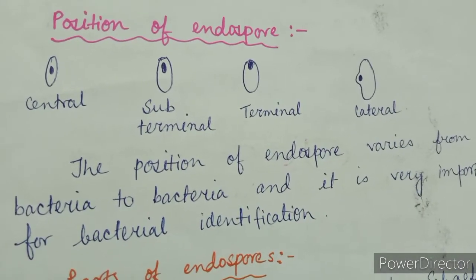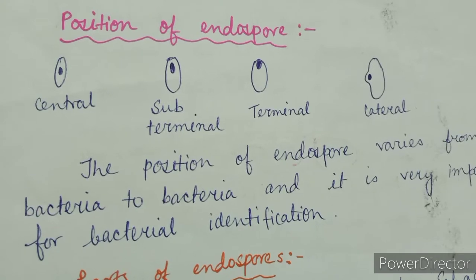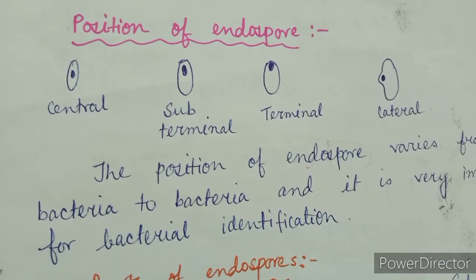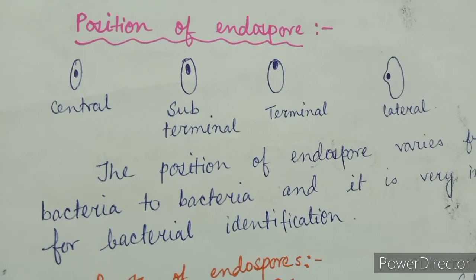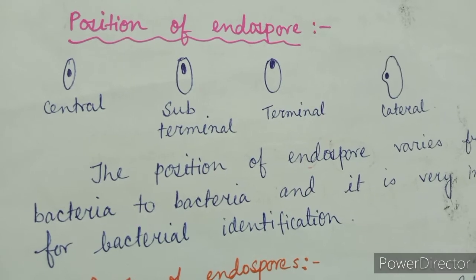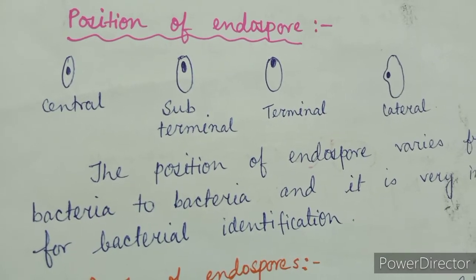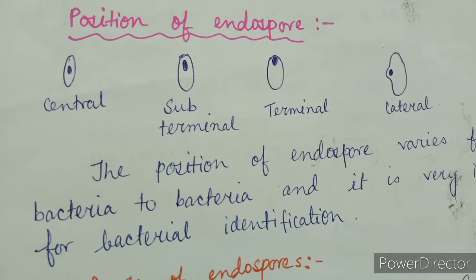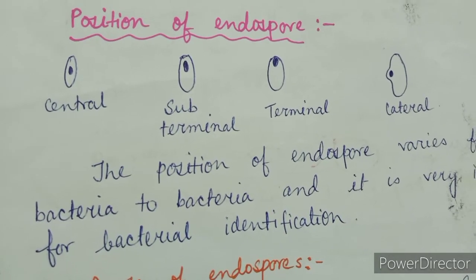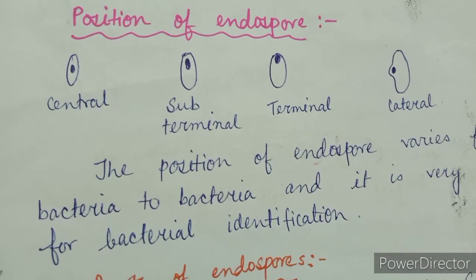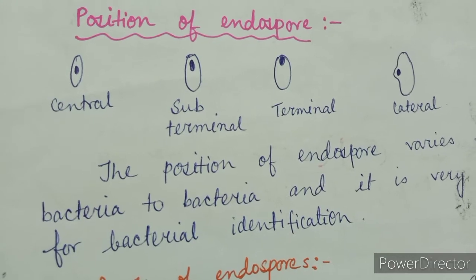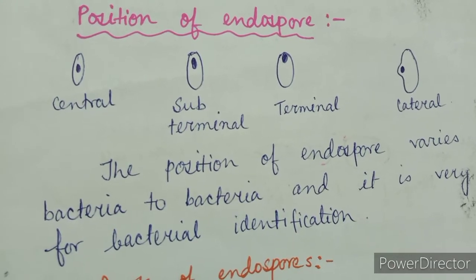The first position is central. When the endospore is situated at the middle portion of the bacteria, then it is known as a central endospore. Subterminal endospores are those which are present between the two extremes — usually seen far enough towards the poles but close enough to the center so as not to be considered either terminal or central.